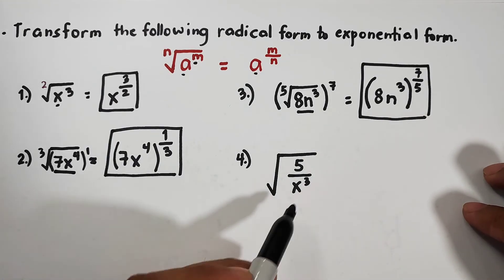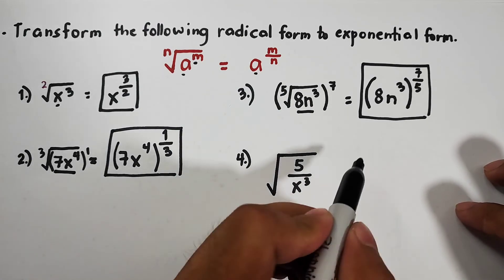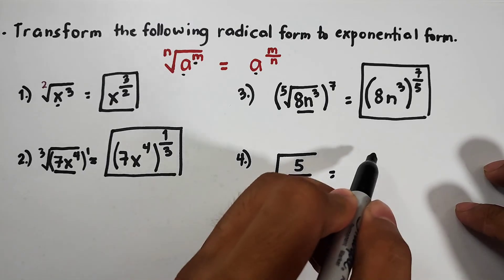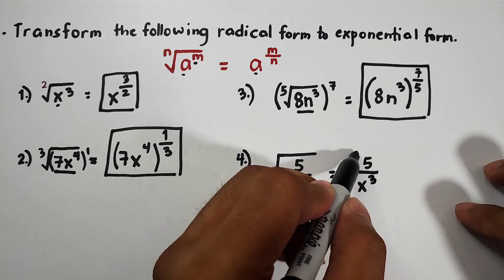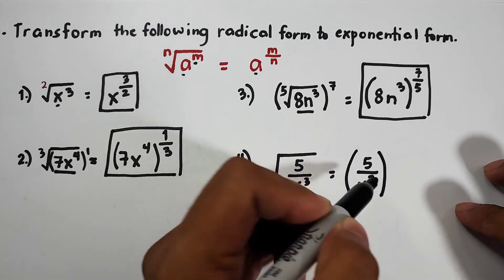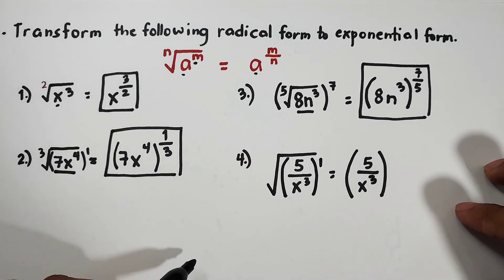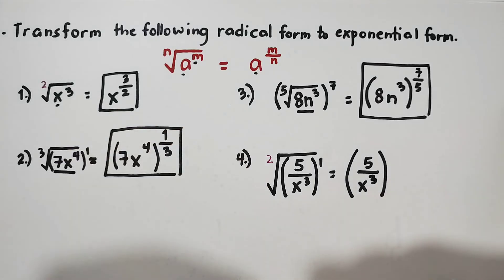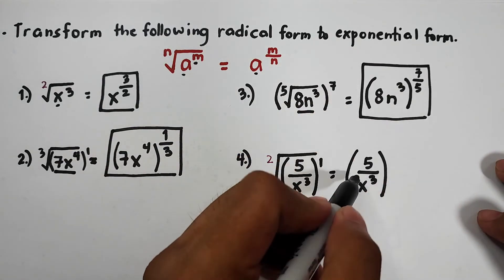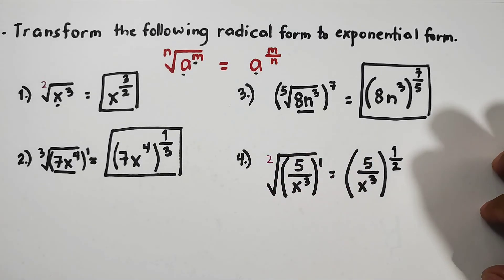Lastly, we have the square root of 5 over x squared. Following what we've been doing: copy 5 over x squared, enclose in parentheses since there is an invisible exponent of 1, and there is an index of 2. So it becomes 5 over x squared raised to 1 over 2 — as simple as that.